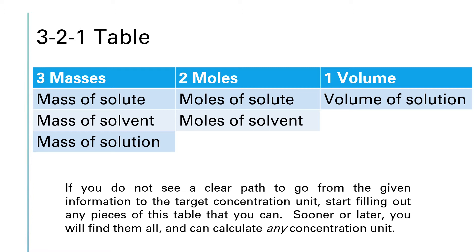If you're in that situation, set up a 3-2-1 table. You are going to make a table where you have three masses, two moles, and one volume. The three masses are the masses of your solute, your solvent, and your solution. The two moles are the moles of solute and solvent, and then the one volume is the volume of the solution.